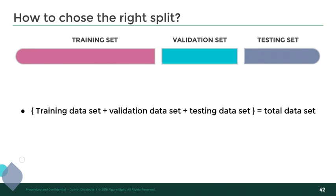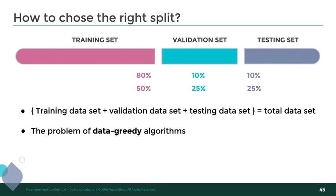How do you choose the right split between training set, validation set, and testing set? The answer depends on your use case — different people do different things, and it really depends on how much data you have and what your goal and type of data is. A typical split would be 80/10/10 percent. Another standard split is 50/25/25 percent. If you don't have a lot of labeled data, it doesn't really make sense to use only 50% for training. We also have a big problem with what I call data-greedy algorithms, because deep learning requires a lot of data — it has many parameters to fine-tune. You want to make sure that the size of your training set is actually as large as it needs to be.